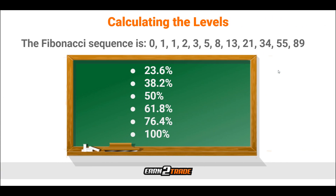Because the Fibonacci retracement tool is based upon the Fibonacci sequence, it's important to understand what the Fibonacci sequence is. It is: 0, 1, 1, 2, 3, 5, 8, 13, 21, 34, 55, and 89. If you are astute with math or solving problems, you may be aware there is a pattern here. What's going on with this number sequence is every two numbers are added to create the third.